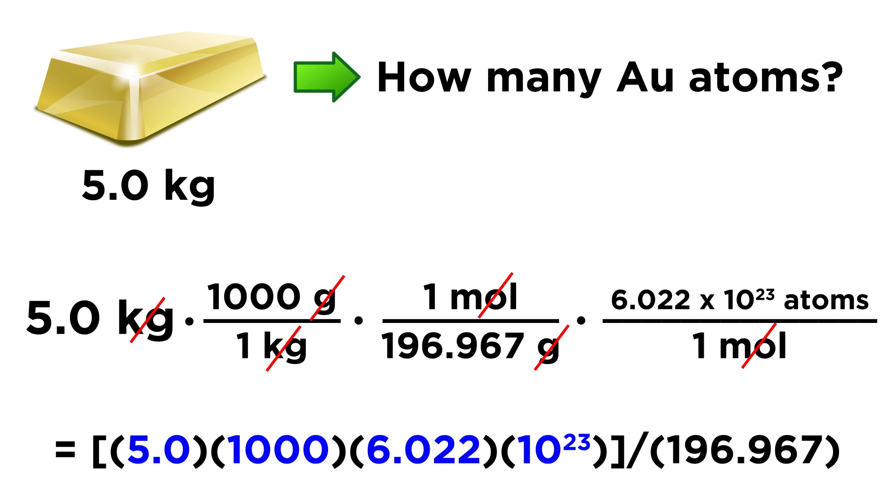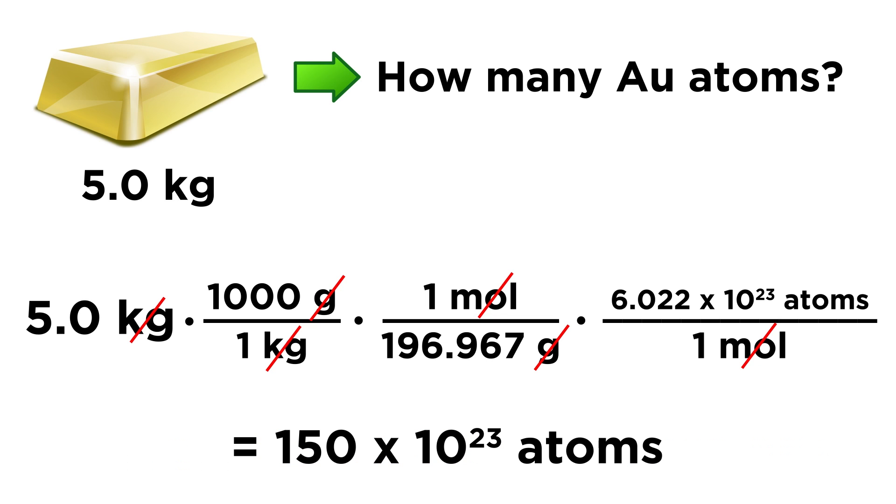So we can just go ahead and plug these into the calculator. We have to multiply everything on the top. So that's 5.0 times 1000 times 6.022 times 10 to the 23rd. And then we divide by everything on the bottom, which in this case is just 196.967. Now here's a tip. If you think this feels a little complicated because of the 10 to the 23rd, what we can do is just enter in all of the other values first. So in your calculator, do 5.0 times 1000 times 6.022 divided by 196.967. Just do all of that first and click enter. And that will give us 150. And now we can multiply that by the remaining 10 to the 23rd.